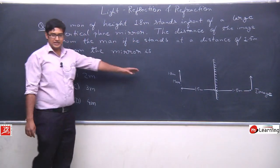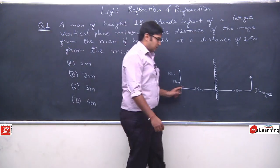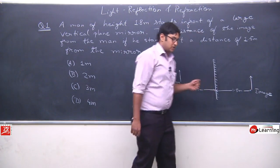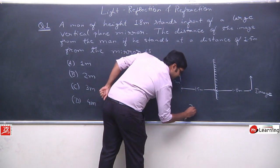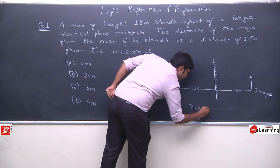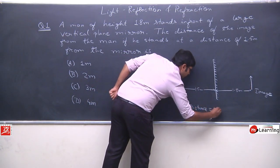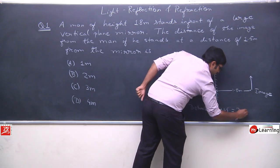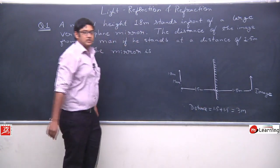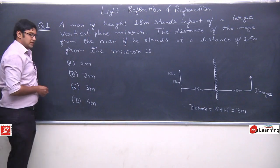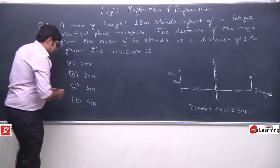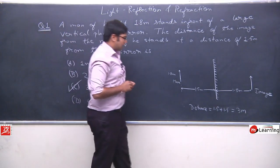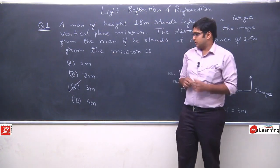And image will look something like this. Now, we can easily calculate the distance between the man and image. It is 1.5 plus 1.5. Therefore, distance is 1.5 plus 1.5 equals to 3 meters. The distance between the man and the image is 3 meters. So, correct option is C.